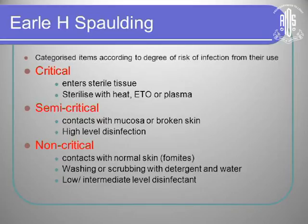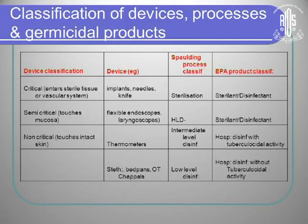For non-critical items, scrubbing with a detergent and water is enough, or you can use a low or intermediate-level disinfectant. Critical instruments are implants, needles, and knives — all of those have to be sterilized. There is no need for chemical disinfection for them.